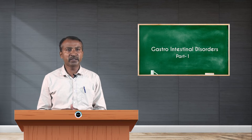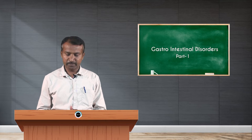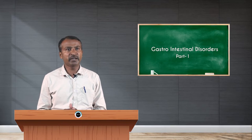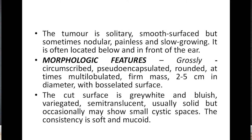The tumor is very common in women aged 30 to 50 years. It is solitary, smooth-surfaced, sometimes nodular, painless, and slow-growing, often located just below and in front of the ear. Grossly, the cut surface shows a well-circumscribed, pseudo-encapsulated, rounded, sometimes multi-lobulated firm mass, two to five centimeters in diameter. The cut surface is gray-white and bluish, semi-translucent, usually solid but occasionally showing cystic spaces, with a soft and mucoid consistency.